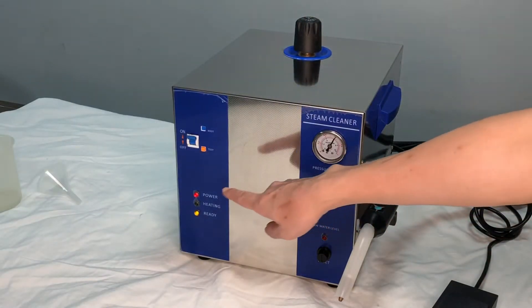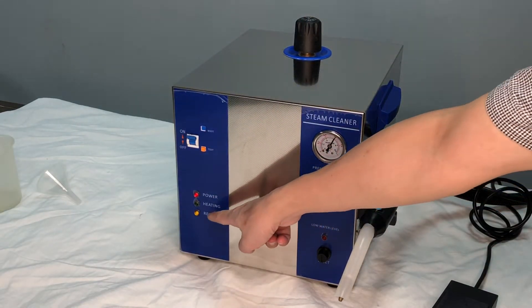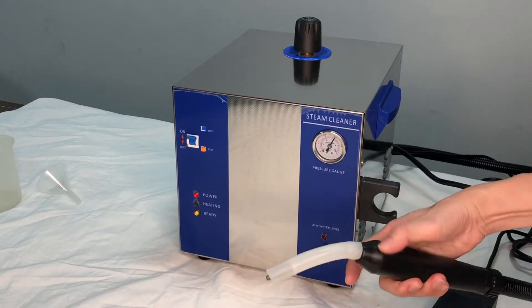Okay, now the pressure is reached, so it turned to the yellow light and the steam is ready. We can use the spray gun to spray the steam out.